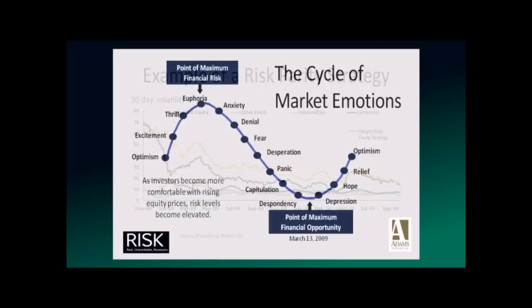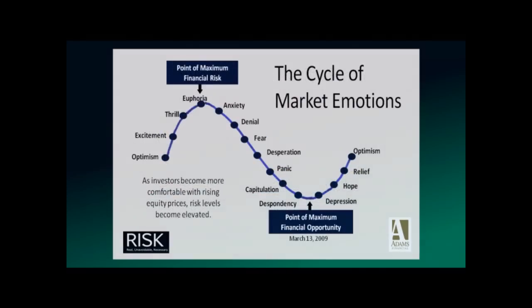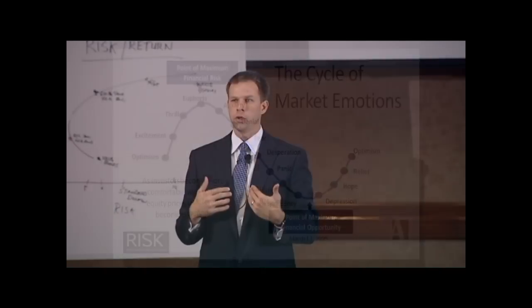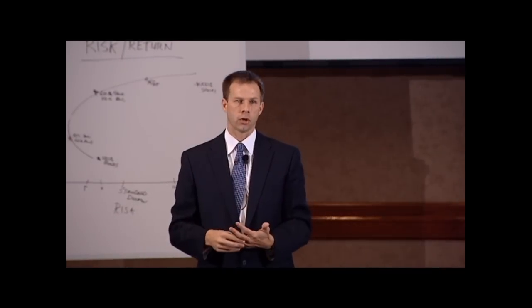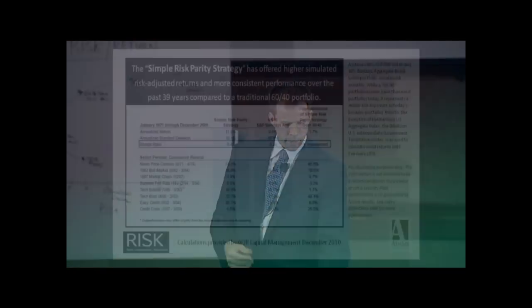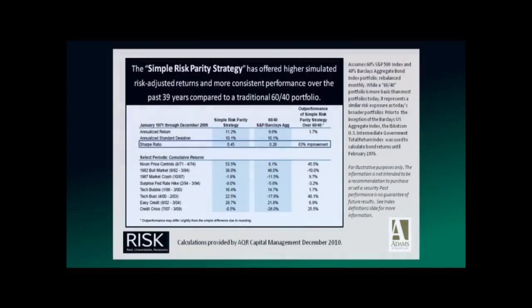Going back to our first slide on market emotions — when things are really going down in a hurry, if you can tighten up the range of volatility, it's going to make you feel more comfortable staying the course in the long run. That's the strategy called risk parity. These examples in the handout show where risk parity over periods of time has produced results.